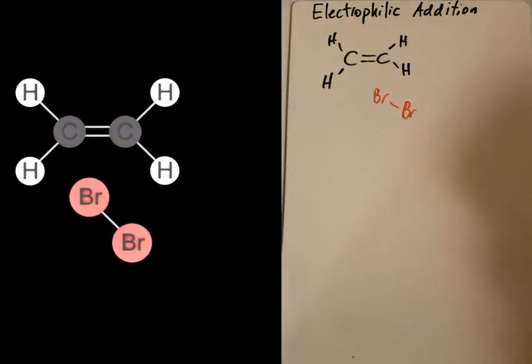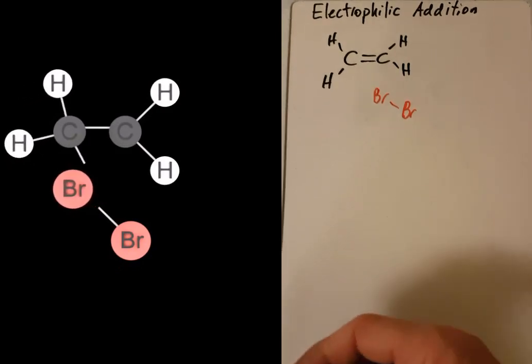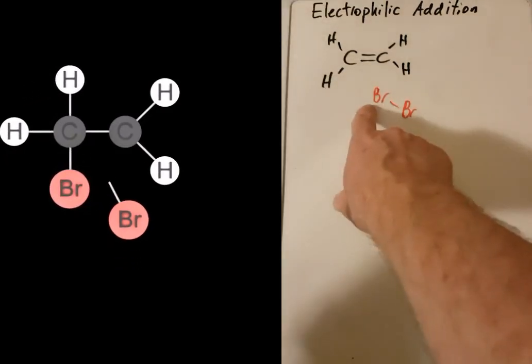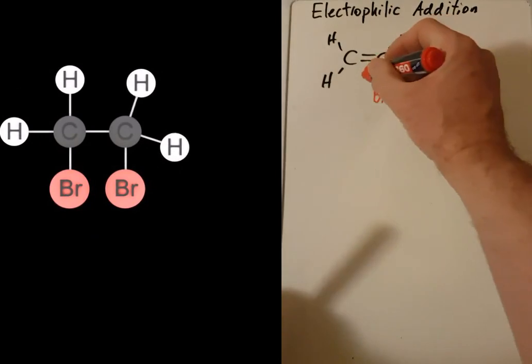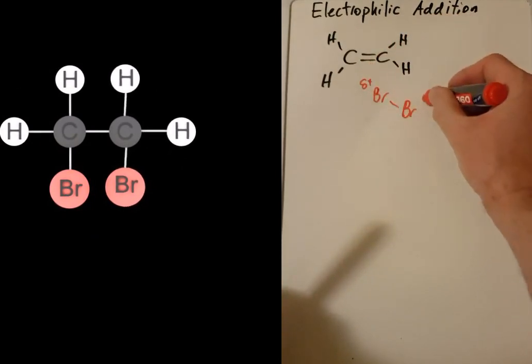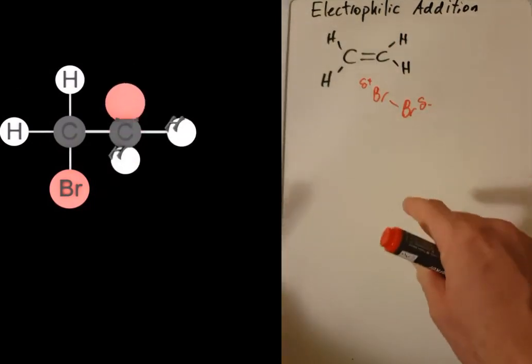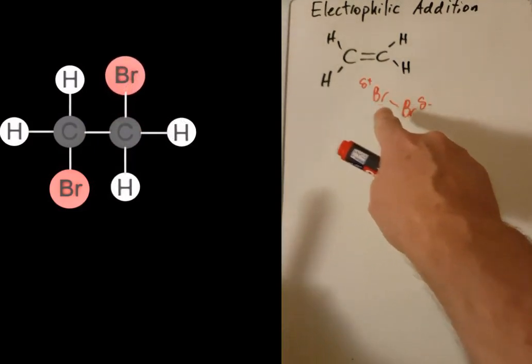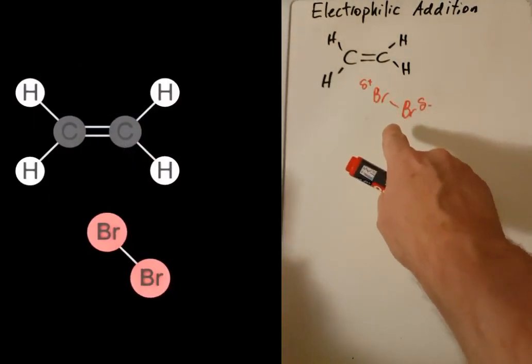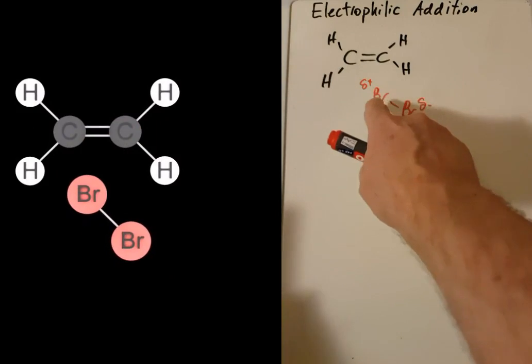So where is this electrophile? Where is this positive species? Well, actually, this is the positive species here. This is a little bit positive, and this end is a little bit negative. Now, that seems nonsensical. Bromine is non-polar.